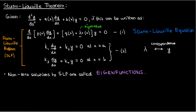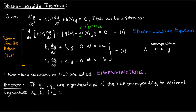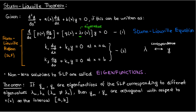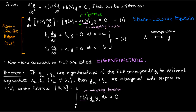All of that is just the prelude to the actual statement of the Sturm-Liouville theorem, which is that if y_m and y_n are eigenfunctions of the Sturm-Liouville problem corresponding to different eigenvalues lambda_m and lambda_n respectively, then y_m and y_n are orthogonal with respect to r(x) on the interval a to b. In other words, the integral from a to b of r(x) times y_m times y_n is zero. This function r(x) is called the weighting function, and that's the Sturm-Liouville theorem.